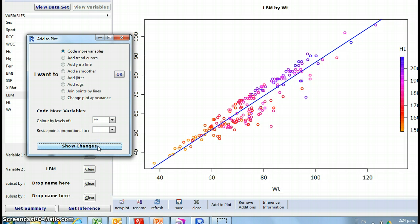Alternatively, you could look at their height, and it gives you a scale on the right. Obviously, the shorter the person, the less weight and lean body mass they have. The taller the person on the right, the more weight and the more lean body mass.